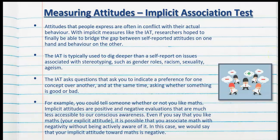Another way to measure attitudes is the implicit association test or IAT. The aim of this test is to dig deeper than a self-report and bypass some of that social desirability, since attitudes that people express are often in conflict with their actual behaviour. The IAT is typically used on issues associated with stereotyping, gender roles, racism, sexuality, ageism, and so on, hoping to bridge the gap between self-reported attitudes and actual behaviour.